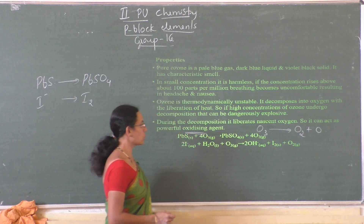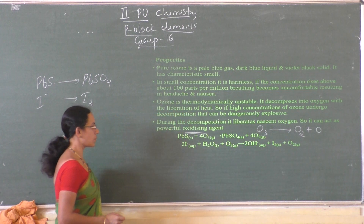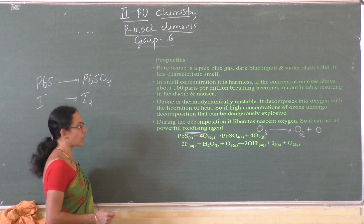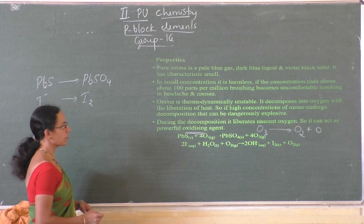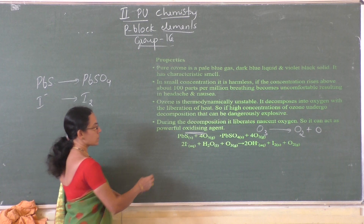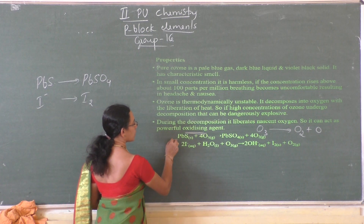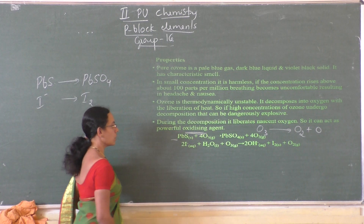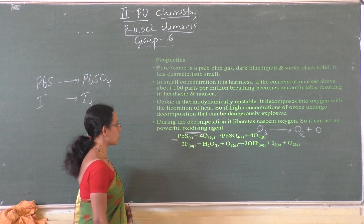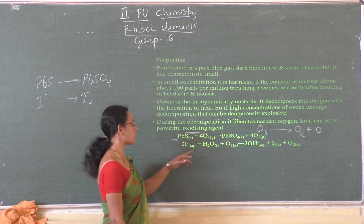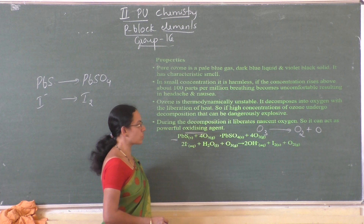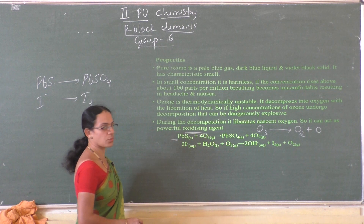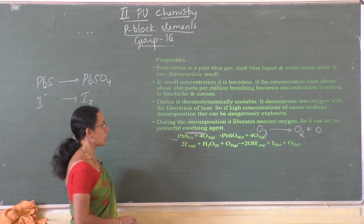These are the reactions where ozone acts as an oxidizing agent. The important equation is the oxidation of lead sulfide: PbS + O3 to give PbSO4 plus 4O2. It also oxidizes I⁻ to iodine I2.